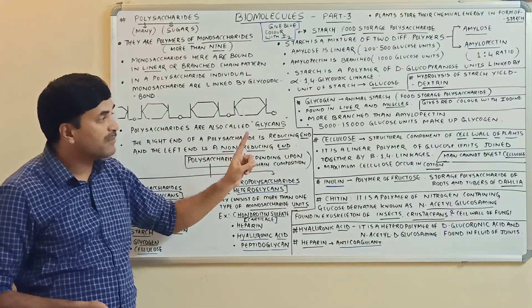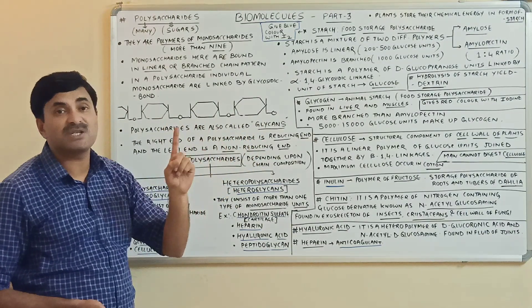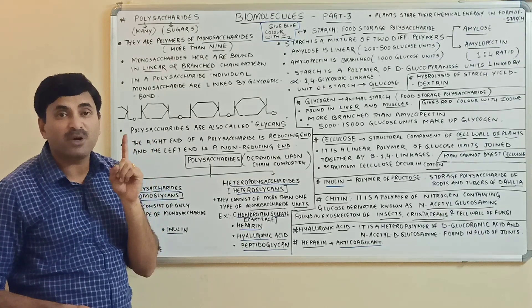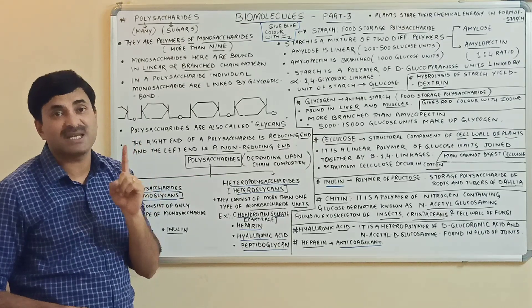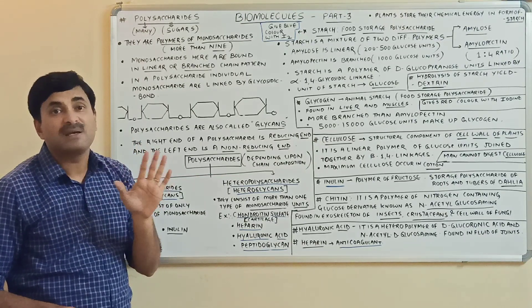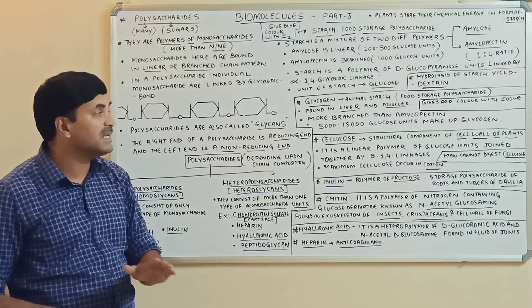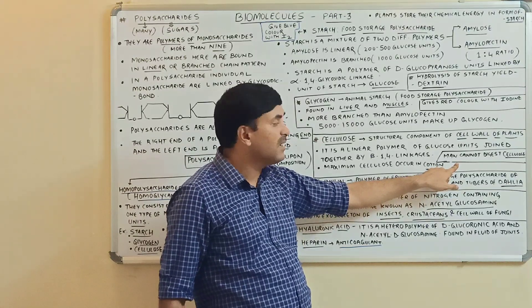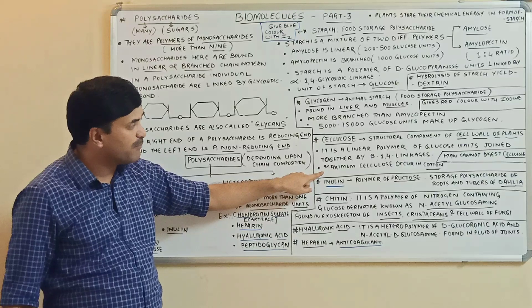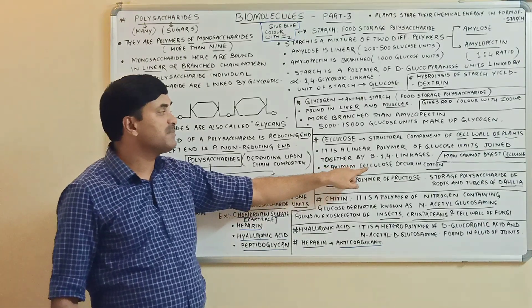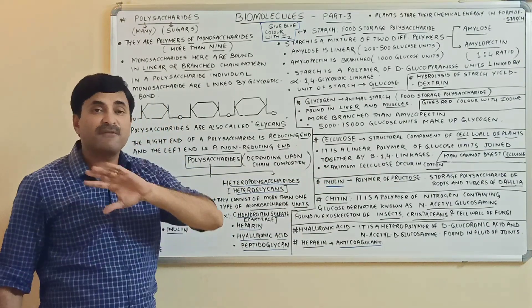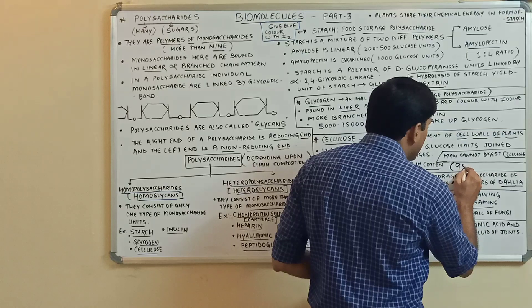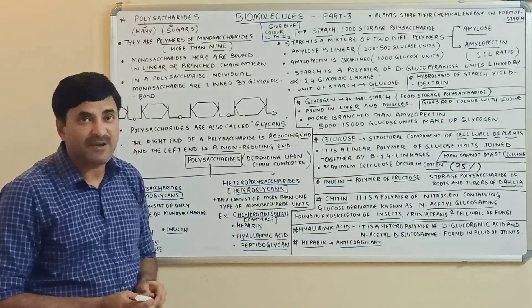Human beings cannot digest cellulose because we lack the cellulose-digesting enzyme cellulase. Cellulose digestion can occur in herbivores. Maximum cellulose is found in cotton — approximately 95 percent.